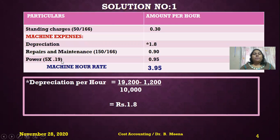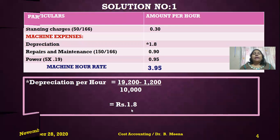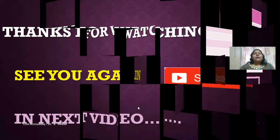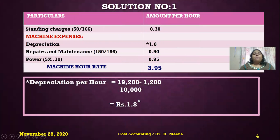Looking at the working notes: cost of the machine is 19,200, scrap value is 1,200, and estimated life is 10,000 hours. Using the formula: (19,200 − 1,200) ÷ 10,000, if I simplify this calculation, I get 1.80 as my depreciation per hour.